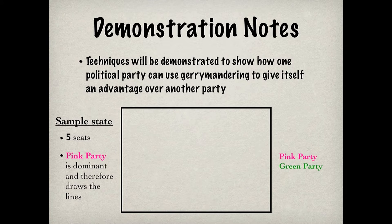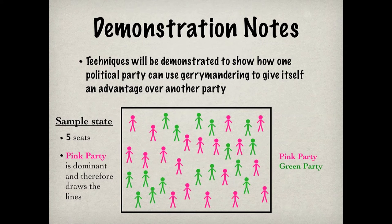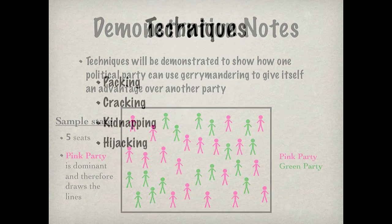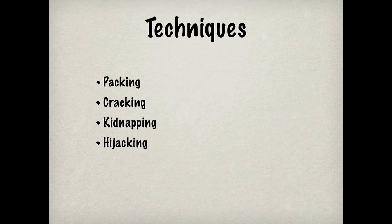The fictitious Green Party is the voting group that is being put at a disadvantage. Pink and Green stick figures represent where members of the Pink and Green parties live. Although a combination of the techniques can be used, I'll demonstrate each individually for the sake of clarity. Now let's see how the Gerrymandering Techniques are done.